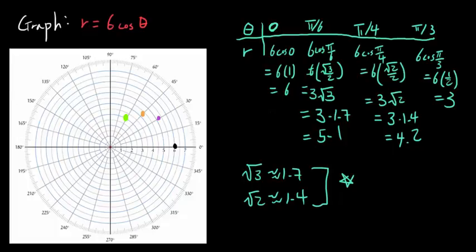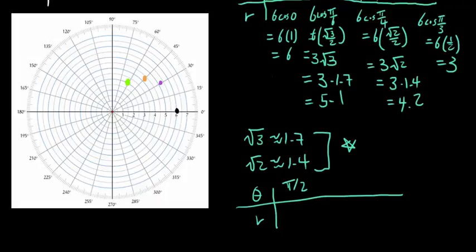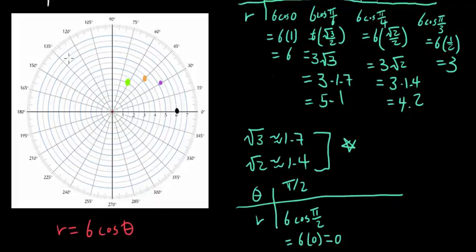Let's continue this chart. Let's try 90 degrees, or pi over 2 radians. Our r is going to be 6 times cosine of pi over 2. Cosine of pi over 2 is actually 0 — my mistake. So 6 times 0 is going to be 0. So for pi over 2, you're not going up or down; you're going to stay in the same place, right at the origin.